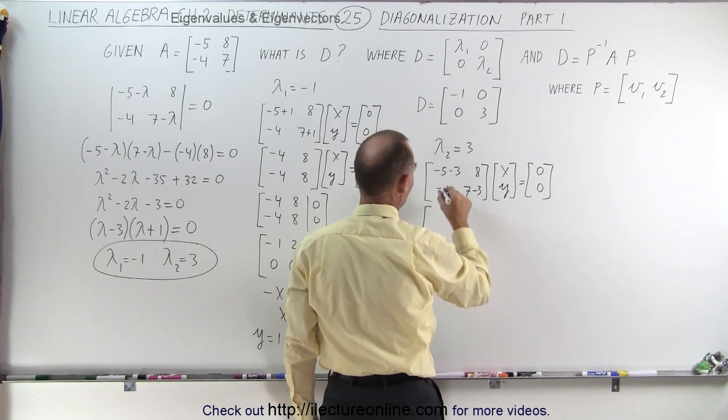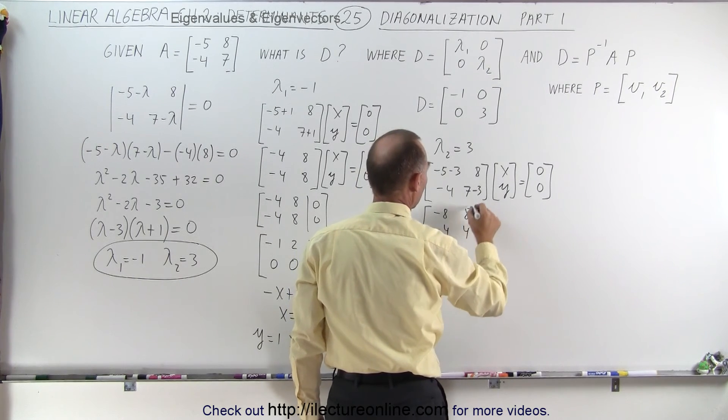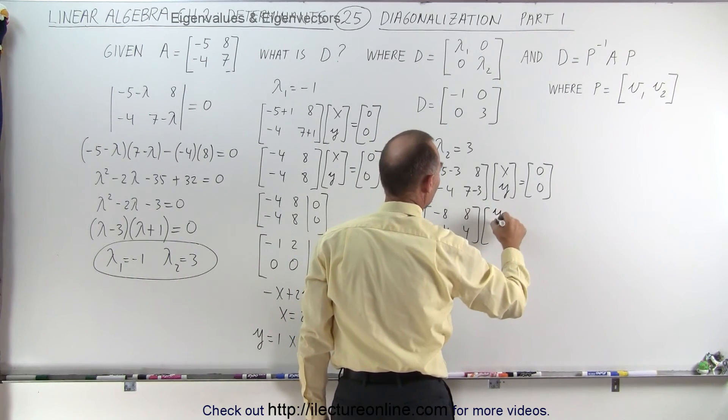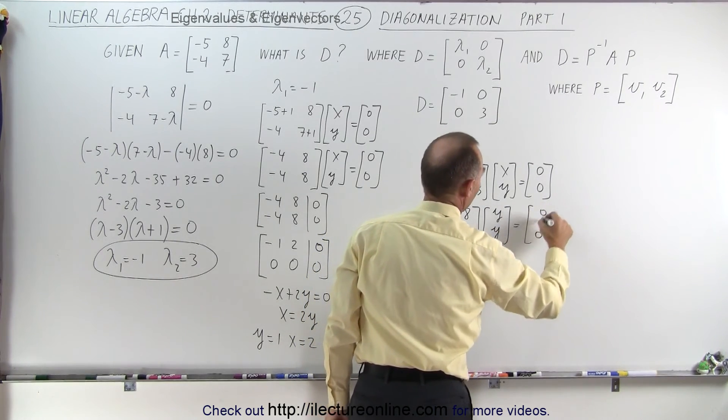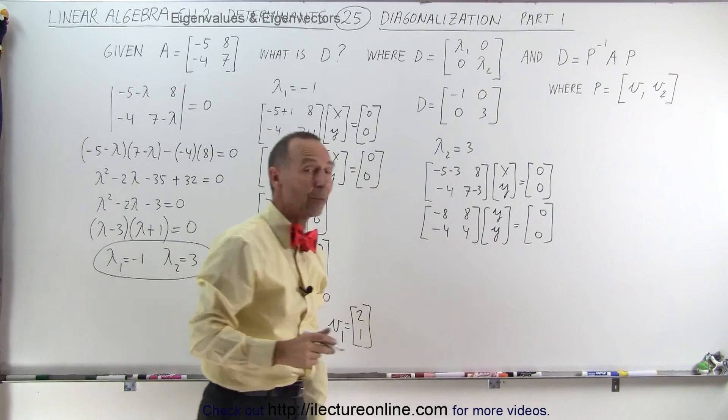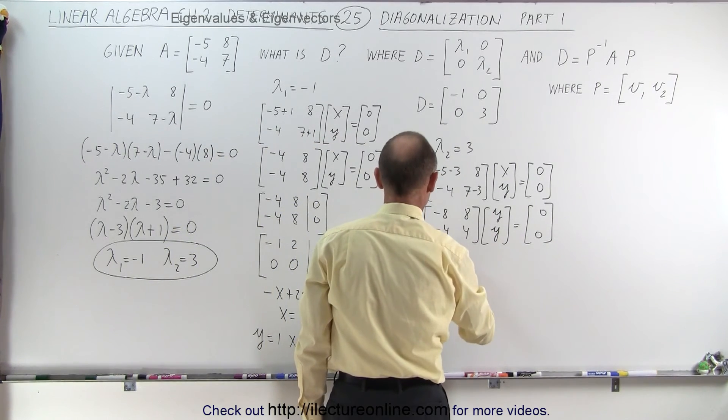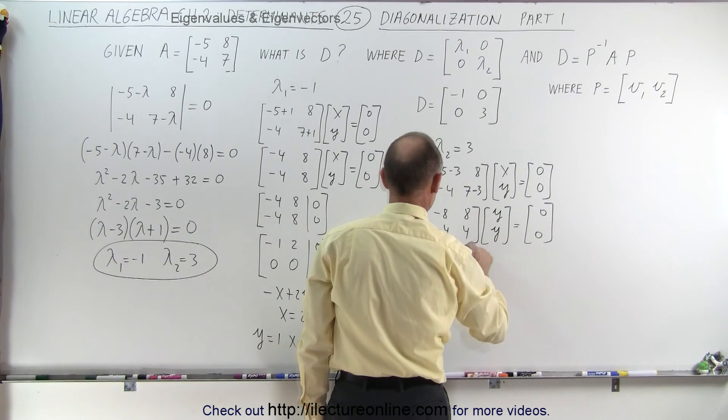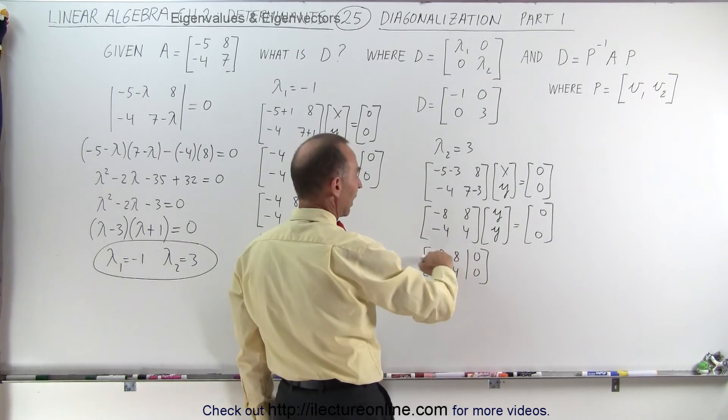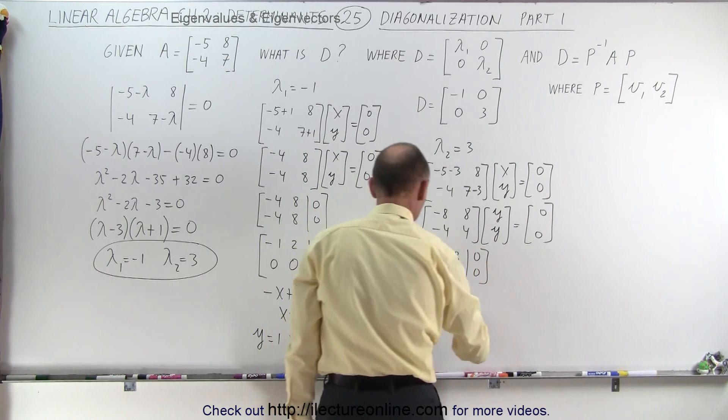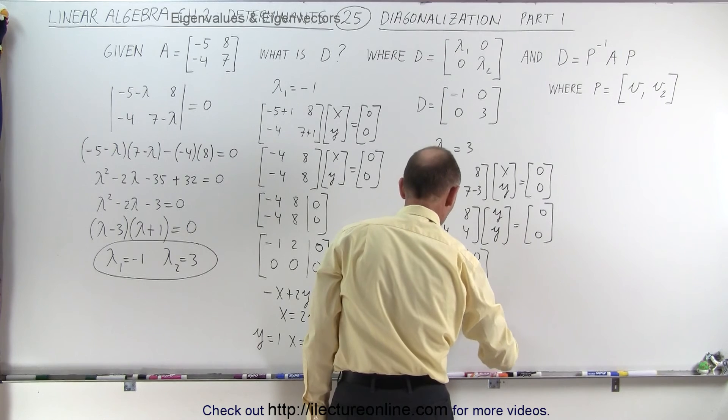Which means that minus 8, 8, minus 4, 4, times x, y gives us the zero vector. And again, it becomes quite obvious that we end up with duplicate rows. Which means that we end up with minus 8, 8 if we draw the augmented matrix, 0. We get rid of one of the rows and divide the top row by 8. We get negative 1, 1, 0, and the rest zeros.